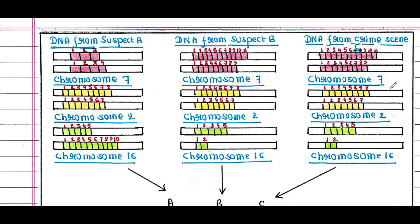Now let's see how DNA fingerprinting actually works. DNA has been collected from a crime scene, marked as C. Two persons are suspected — Person A and Person B — and DNA is collected from both, marked as A and B. The DNA is cut using restriction enzymes, yielding different fragments. Among 23 pairs of chromosomes, we are examining fragments from chromosome 7, chromosome 2, and chromosome 16. Each chromosome exists in a pair, and these are the VNTR repeats.